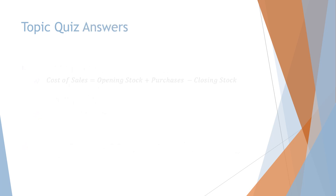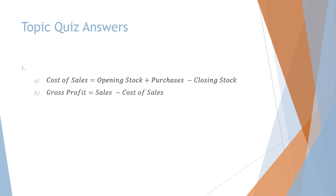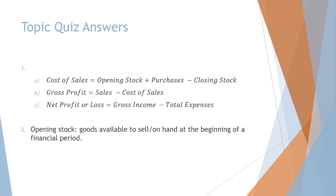Topic quiz answers. Number one: a) cost of sales is equal to opening stock plus purchases minus closing stock. b) Gross profit is equal to sales minus cost of sales. c) Net profit or net loss is equal to gross income minus total expenses.